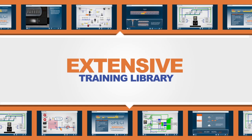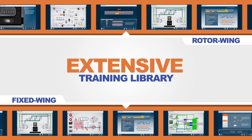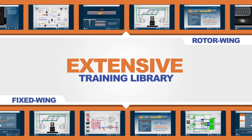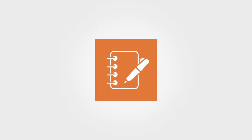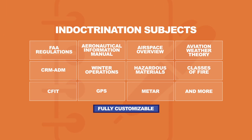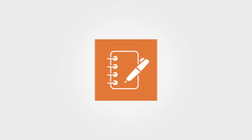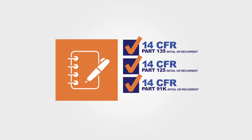Our extensive training library is built upon the foundation of recurrent aircraft systems training, such as fixed wing and rotor wing, and our customizable indoctrination subjects are designed to meet the ground training requirements of 14 CFR Part 135, 125, and 91K initial or recurrent.